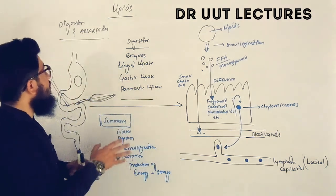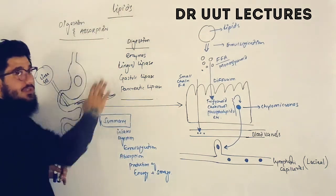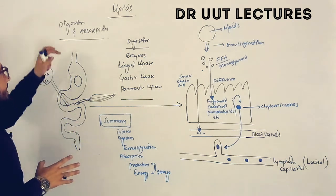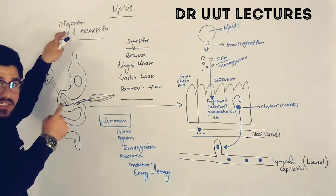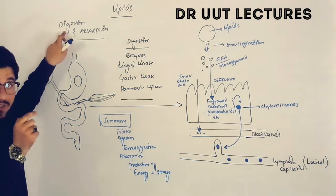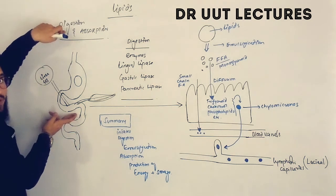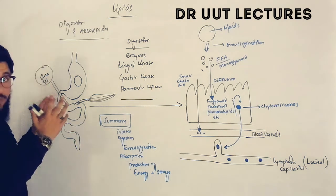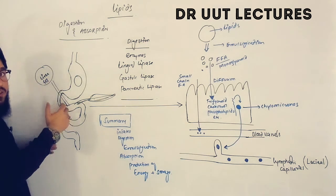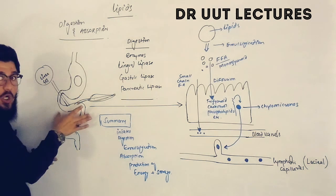In today's tutorial, we will talk about the digestion and absorption of the lipids. Let's start from the very first term — digestion. From this point of view, it is believed that digestion starts from the mouth and ends at the small intestine. The logic behind this is the availability of enzymes in this particular portion of the GIT.